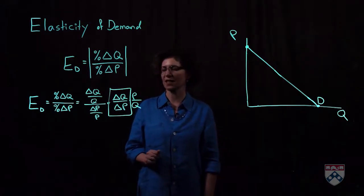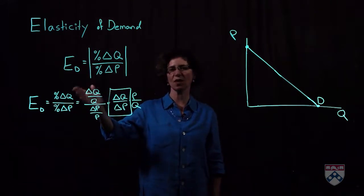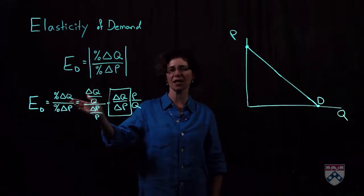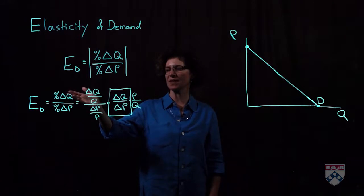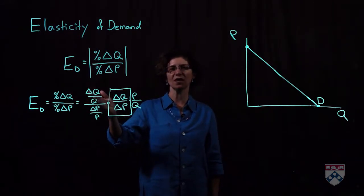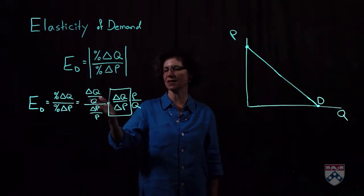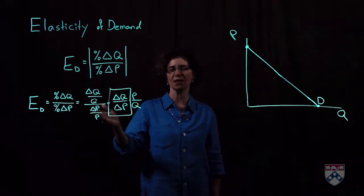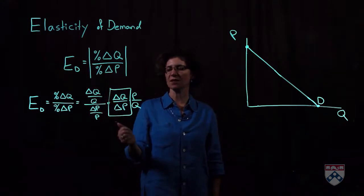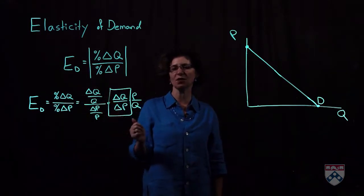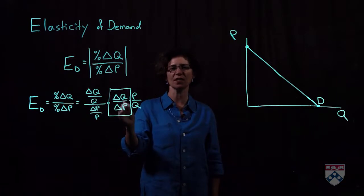Let's go back to the definition of elasticity, percentage change in quantity over percentage change in price. We can approximate the percentage change in quantity as the change in quantity over quantity, and we can approximate the percentage change in price as the change in price over price. Rearranging this, we get that elasticity is equal to the change in quantity over the change in price times price over quantity.